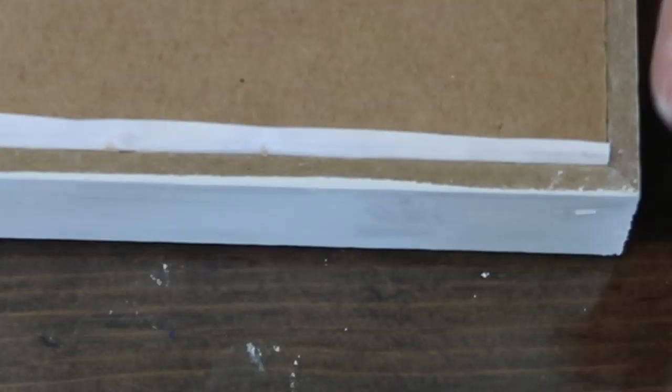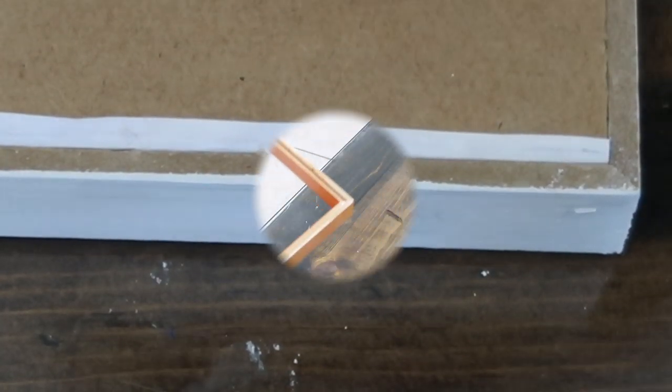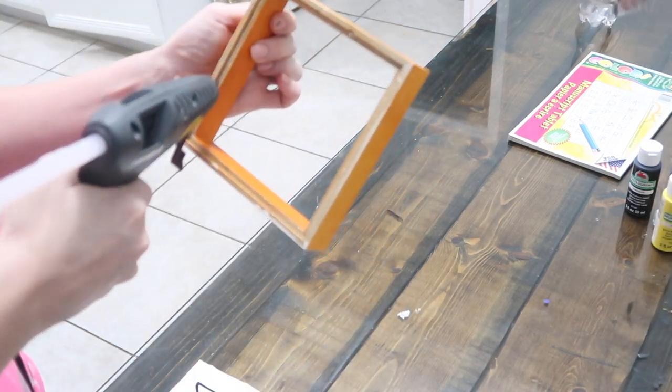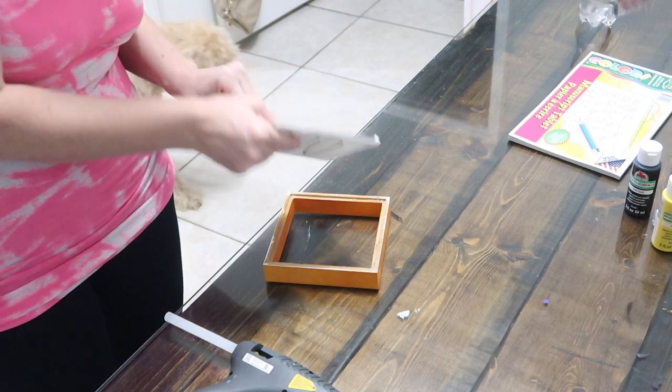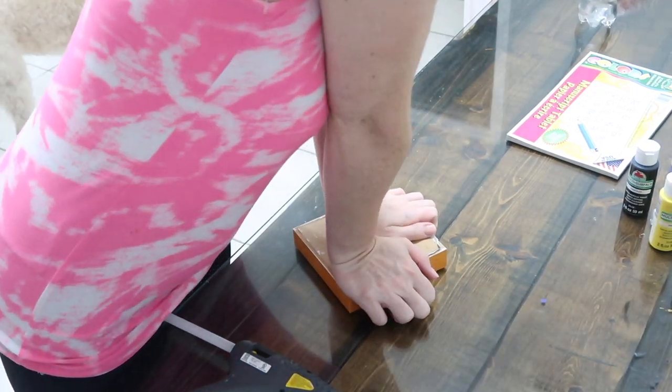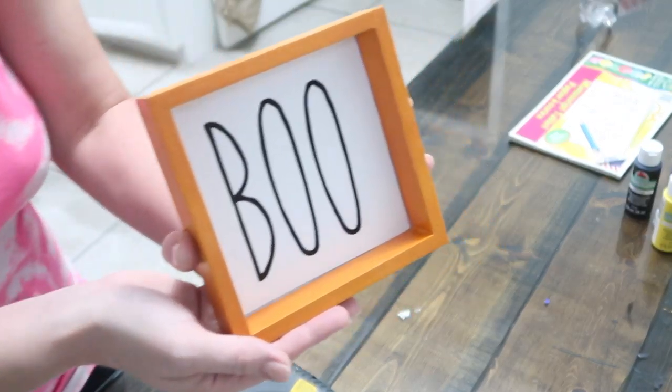Any of the paper that's left out, just fold it over. This is optional, but I decided to line the inside of the frame with a little bit of glue to make sure the back stayed very secure. It fits just fine without it, and here it is. It is so cute.